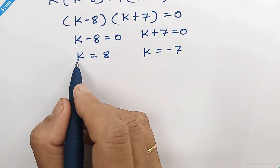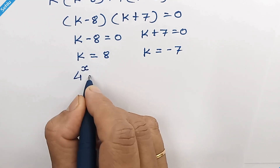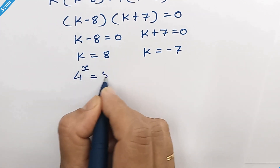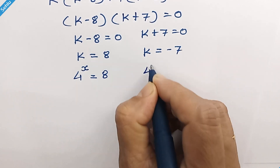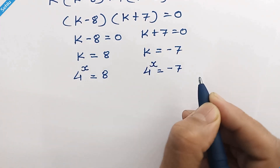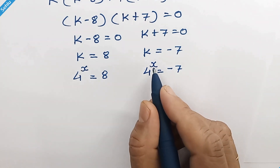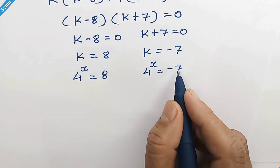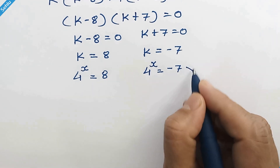Now k was taken for 4 raised to x. So we have two possibilities: 4 raised to x is equal to 8, or 4 raised to x is equal to negative 7. For any real value of x the result cannot be negative, so we will discontinue that part.